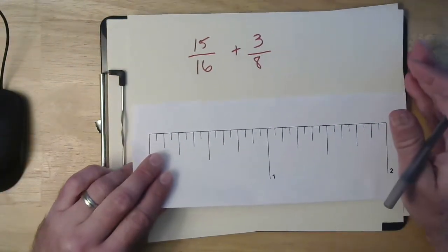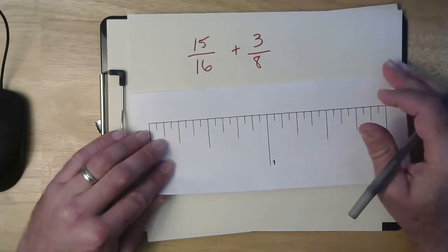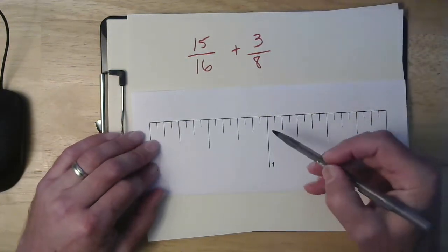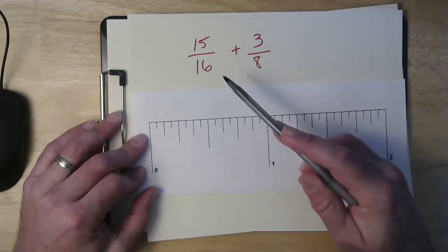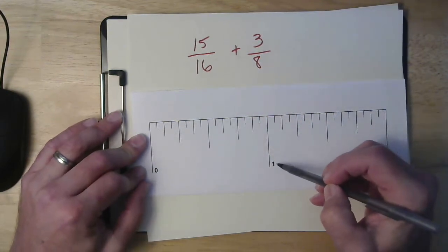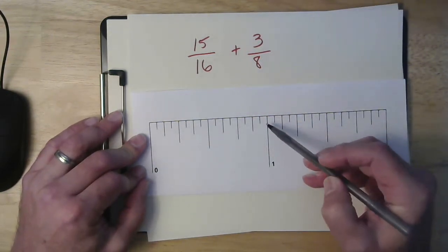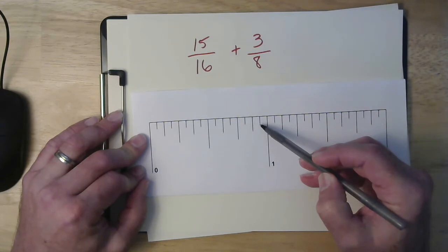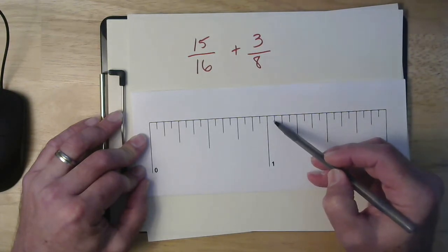Another one here. So this one is fifteen-sixteenths plus three-eighths. When I look at fifteen-sixteenths, what I do is know that one inch is sixteen-sixteenths. So that makes this fifteen-sixteenths. An eighth is two-sixteenths. So I'm going to do that once,